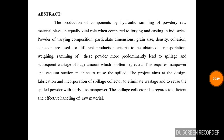Abstract: The production of components by hydraulic ramming of powder raw materials plays an equal role compared to the powder casting industry. The powder of varying combustion, particle size, density, position, and composition are the usual production criteria. The raw material transposition, ramming, and weighing of this powder predominantly lead to spillage and subsequent wastage, which is neglected. We require manpower and a vacuum suction machine to reuse the spilled powder. The project aim is the design, fabrication, and incorporation of a spillage collector to eliminate wastage, reuse the spilled powder with less manpower, and enable efficient handling of raw material.